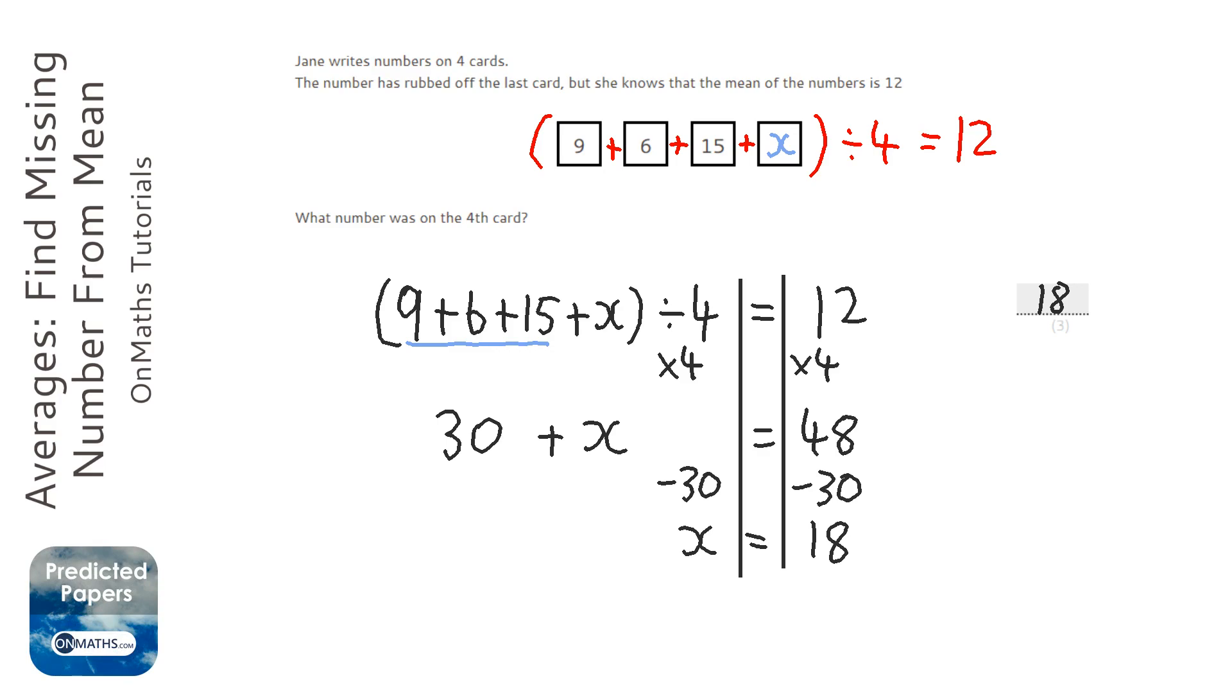So 9 plus 6 plus 15 plus 18 is going to be 48. 48 divided by the amount of numbers, which is 4. So 48 divided by 4 is 12. So that's my answer.